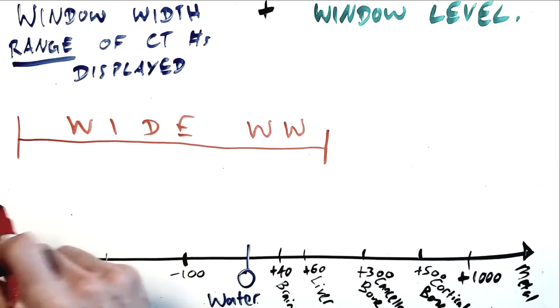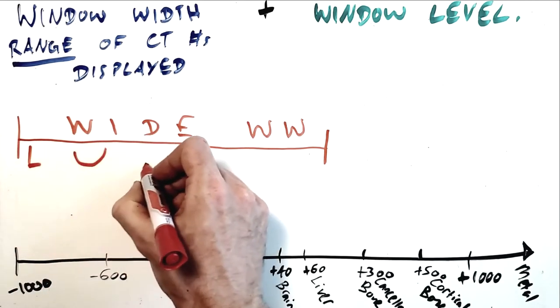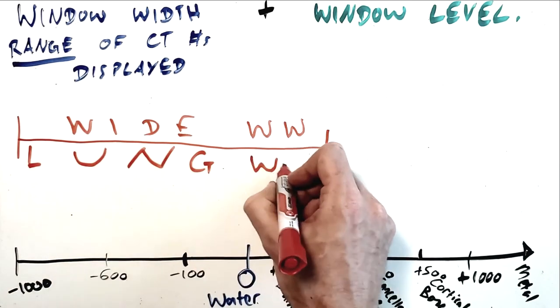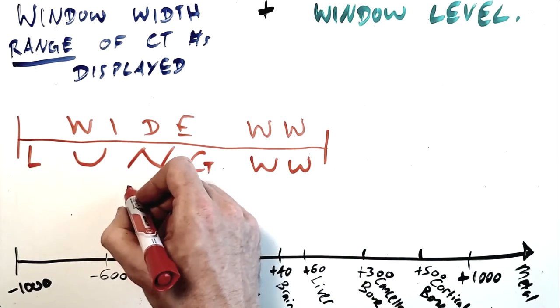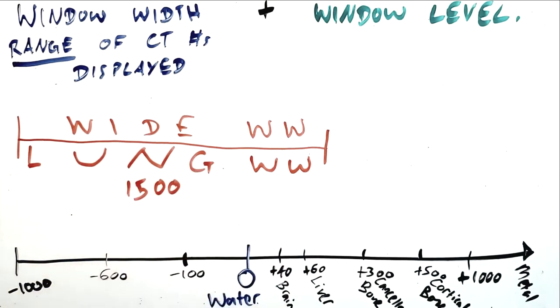An example of a wide window width would be a lung window with a width of approximately 1500, where we're assessing chest tissues, vessels and their relationship with the airspace of the lungs. And because these differ very widely in density, we need to use a wide window width to distribute that scale between black and white over a very large range.